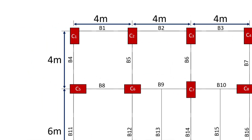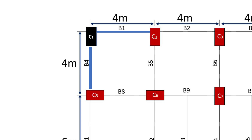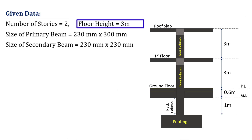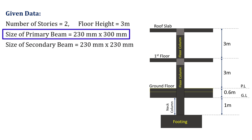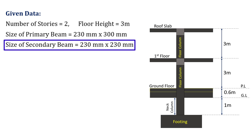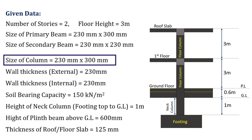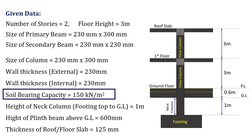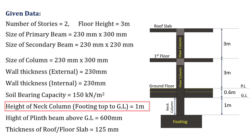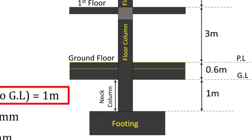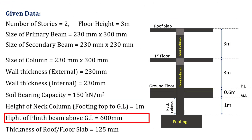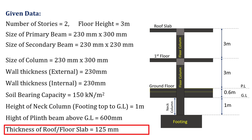We will be calculating the approximate axial load on column 1, which is connected by beams B1 and B4. The number of stories is 2 and the floor height is 3 meters. The size of the primary beam is 230 x 300 mm and the secondary beam is 230 x 230 mm. The column size is 230 x 300 mm and the external and internal wall thickness is 230 mm. The soil bearing capacity is 150 kN per meter square, the neck column height is 1 meter, the plinth beam height above ground is 600 mm, and the roof and floor slab thickness is 125 mm.